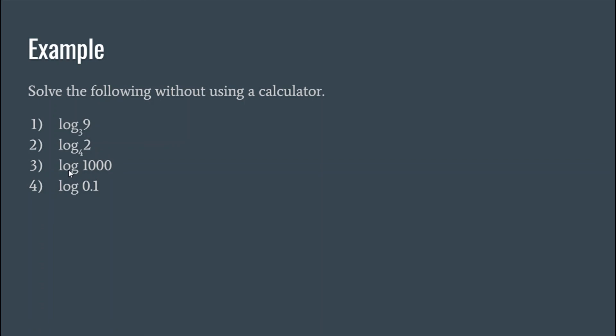If you don't see a base here, it's common knowledge that the base is automatically 10. So 10 to what power would be 1000? That's three. And base of 10 to get 0.1 or one tenth would be negative one. To get a reciprocal you would need a negative exponent.